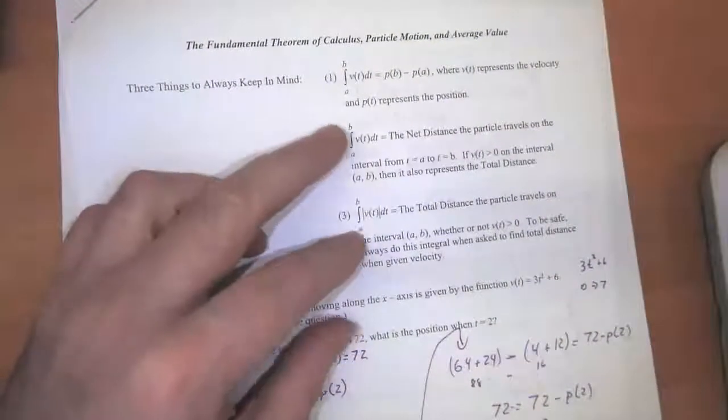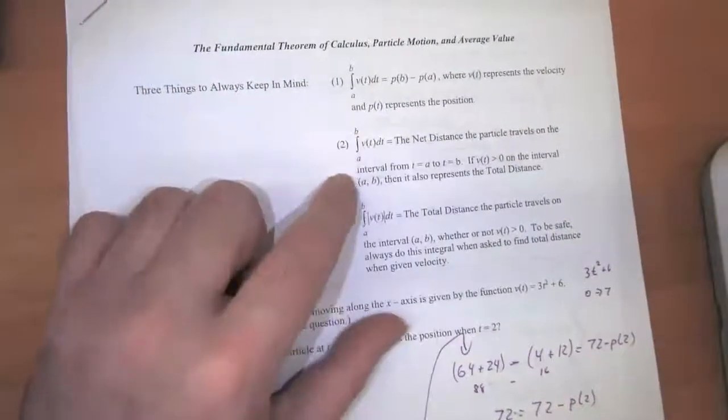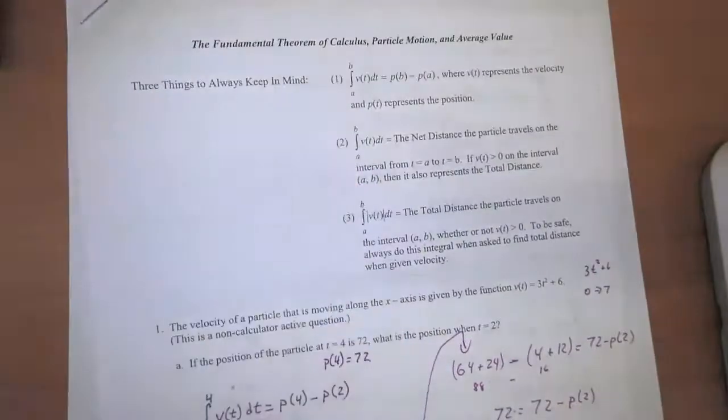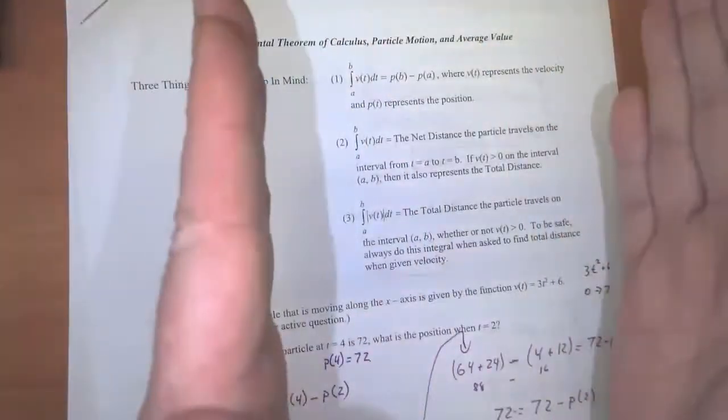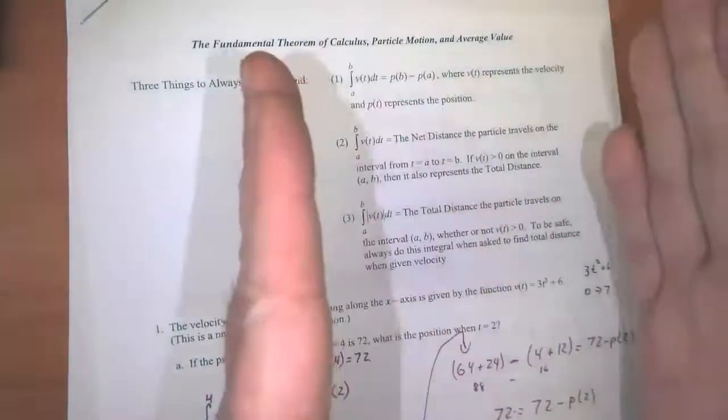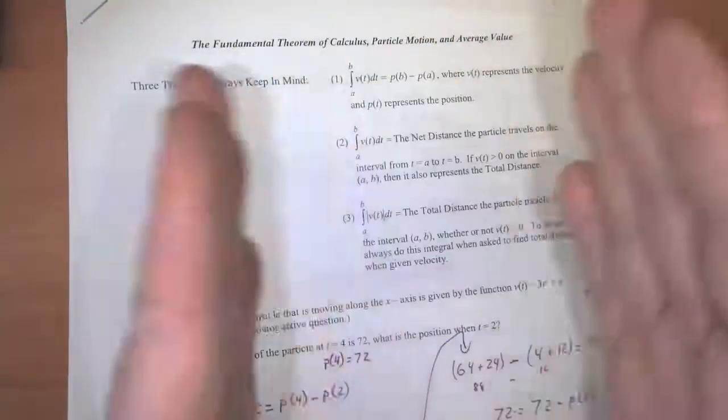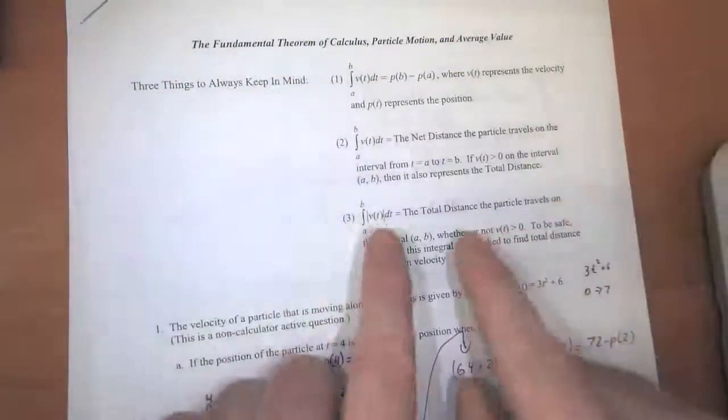Remember back at the front of the unit on page 528, we talked about the difference between the two of them. So the net distance, we want to talk about the distance that's moving to the right as a positive number, the distance that's moving to the left as a negative number, and they might cancel each other out if we've got both of them.